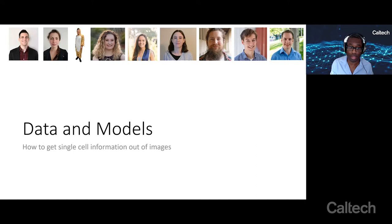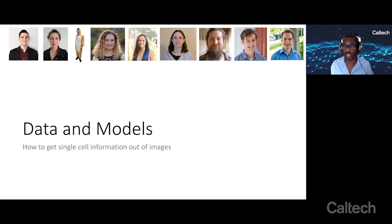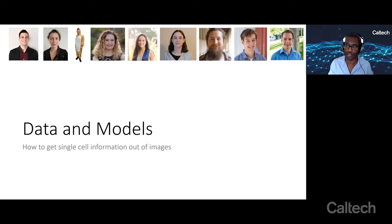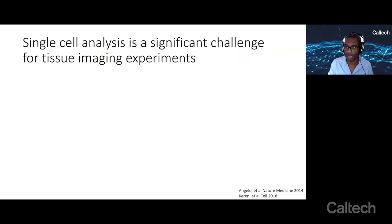I'd like to tell you about one story that's come out of our lab at the intersection of data and models. This features contributions from almost our entire lab. Eric Moen and Geneva Miller, a postdoctoral fellow and research technician, spearheaded a lot of the work. Noah Greenwald is a graduate student at Stanford who collaborated with us to generate these data sets. Morgan Schwartz and Emily Laubscher are two graduate students in our lab who made substantial contributions. Tom Dougherty and Will Graff, our two software engineers, have gone above and beyond to turn our algorithms into useful software packages, not just Jupyter notebooks living in GitHub.